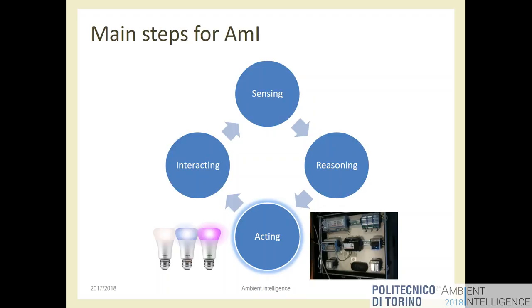From the data we must act — go back to the environment and change it. Collecting and analyzing information alone doesn't make the environment more intelligent; it only makes it a monitored environment. To make it intelligent, the environment should react in a sensible way. Everything that can be commanded electrically is easy to do — lights, water valves, multimedia, opening doors with a motor. We can create a small scale model to show something is possible. We need to think about the action on the environment by the system.